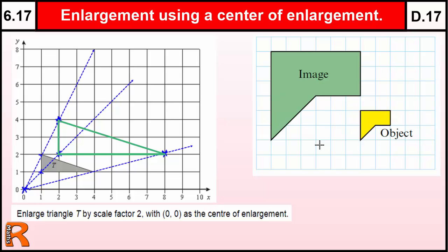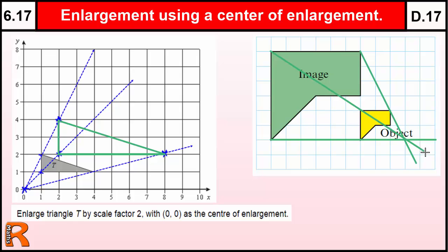The last part is finding the centre of enlargement when you're given the object and the image. You draw lines from each point on the original through the corresponding point on the image and keep going. Take this point here to that point there and extend the line; do the same for another pair of points; and another. It's quite clear that the centre of enlargement is at the point where all the lines intersect. That's how we find the centre of enlargement when we have both the object and the image.